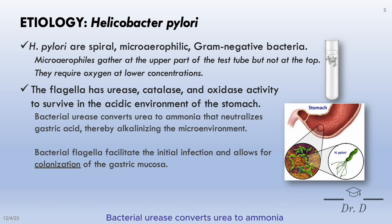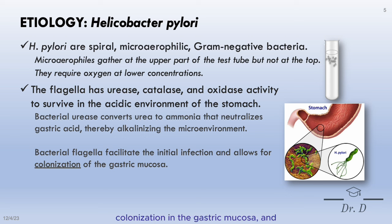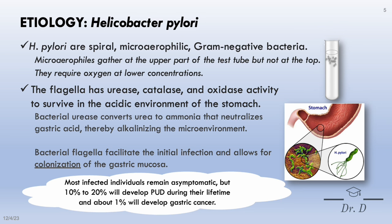Bacterial urease converts urea to ammonia, which neutralizes gastric acid and alkalizes the microenvironment. The flagella furthermore allows for colonization in the gastric mucosa. Most infected individuals remain asymptomatic, but 10 to 20% will develop peptic ulcer disease during their lifetime, and about 1% will develop gastric cancer.